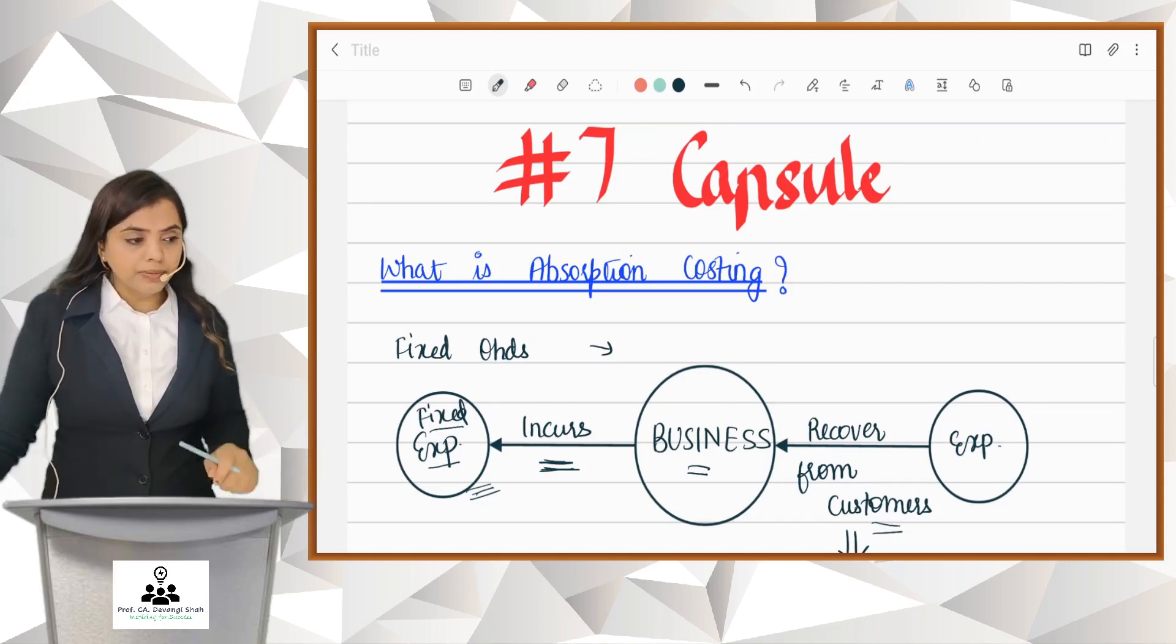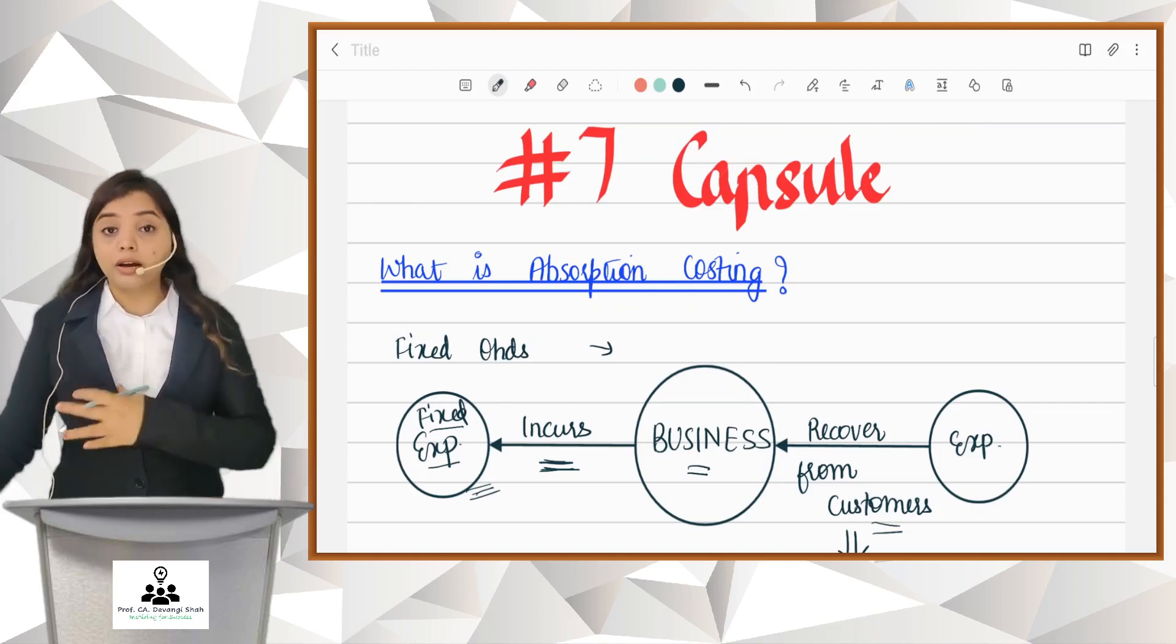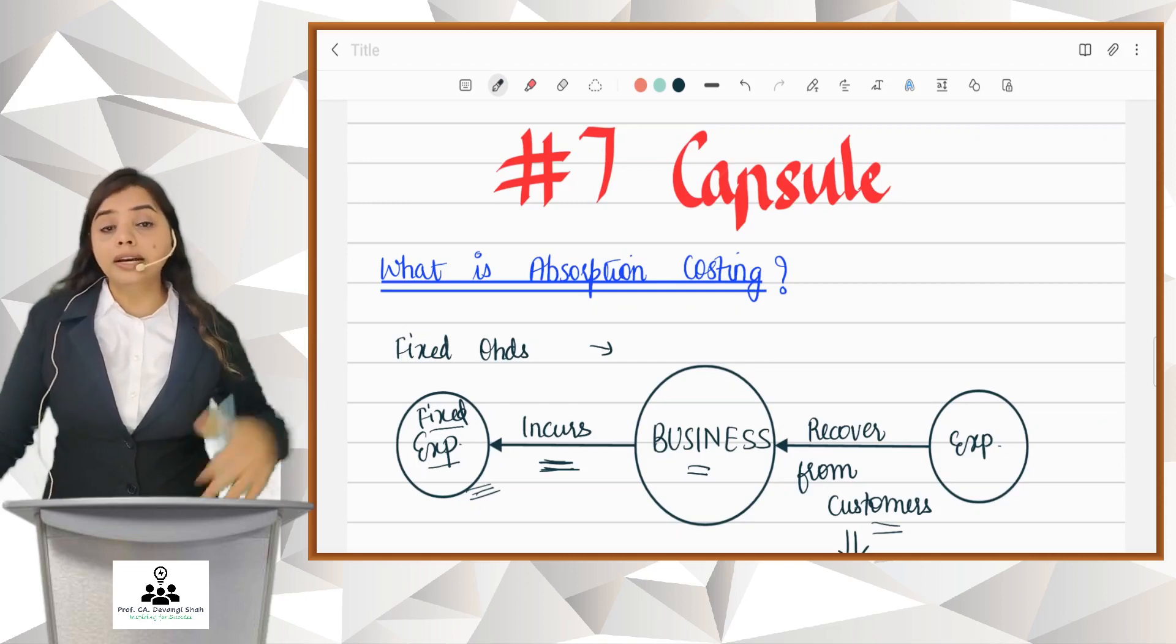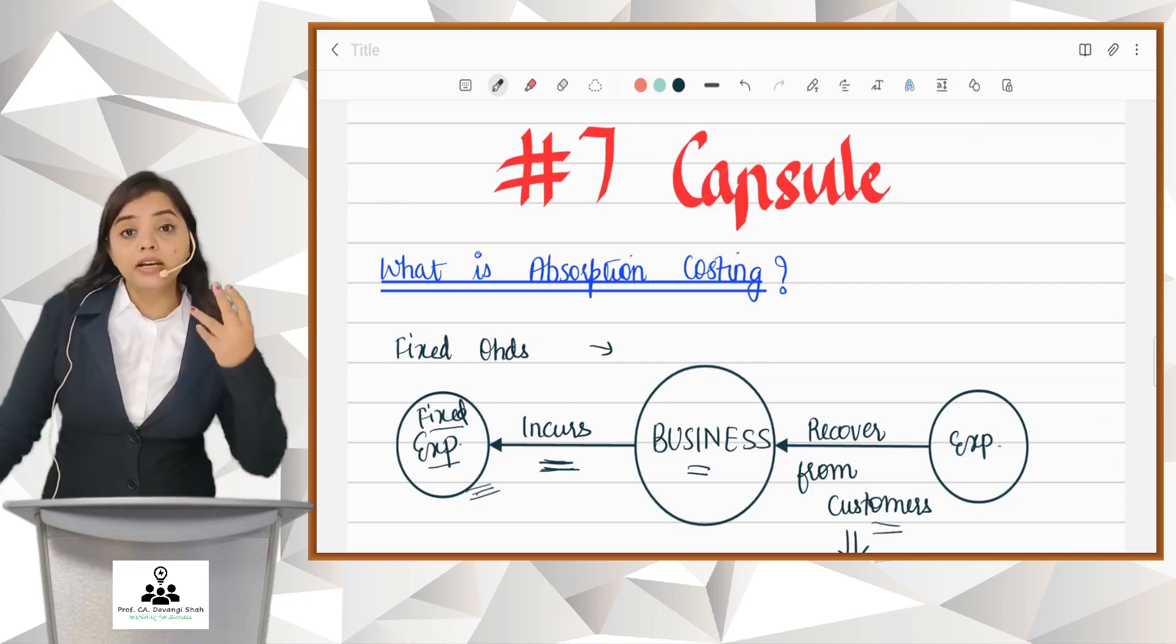So what is this absorption costing? In business we incur many expenses. Here let us focus on fixed expense. Whatever expense we incur in the business is to be recovered from the customer. Now how to recover rent from the customer? How can I tell my customer you give me this much? What will be that amount?